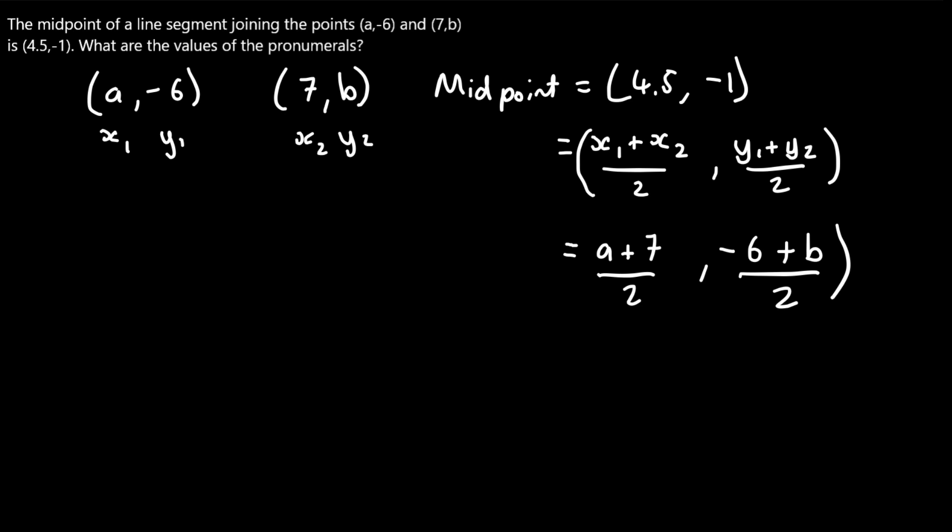So the midpoint is just coordinates — we've got an x coordinate of 4.5 and a y coordinate of negative 1. What I can do now is split up the x coordinate: 4.5 equals the fraction (a + 7) over 2.